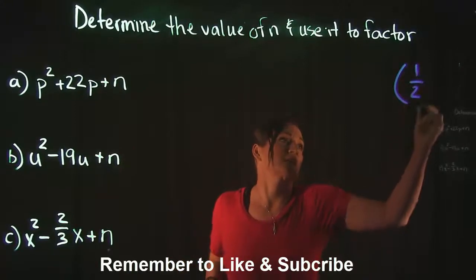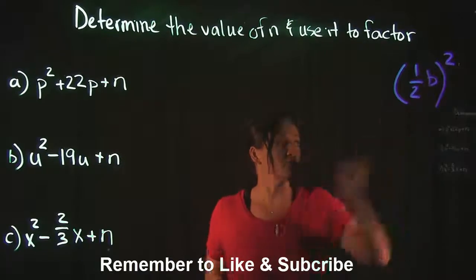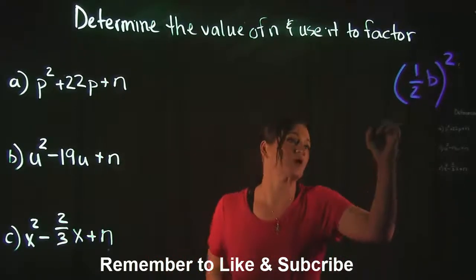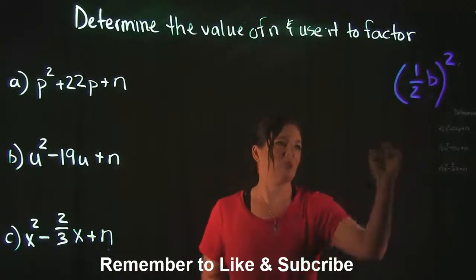That mini formula looks like this: you take one half of b and then you square it. So you take half of b and you square it. Now you might be asking, well what in the world is b? How do you know what b is?